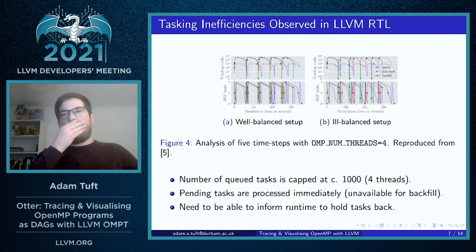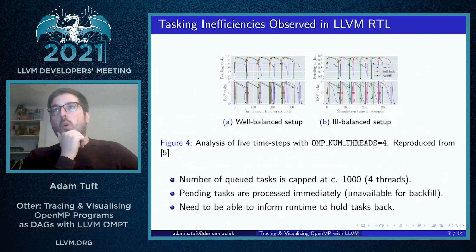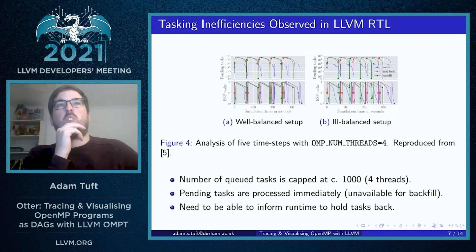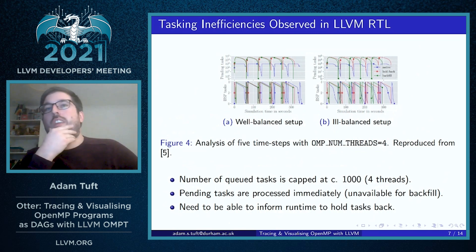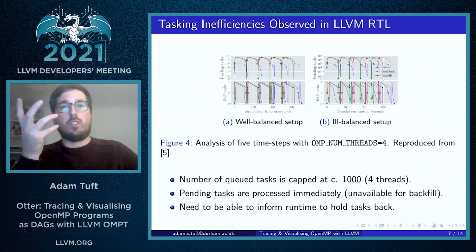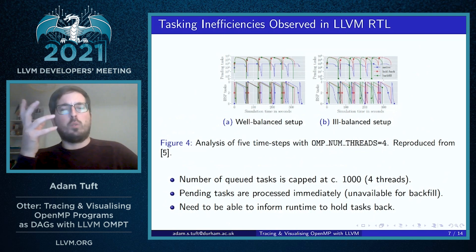The results of this exploration into the performance of this solver in the LLVM OpenMP implementation did reveal some unexpected results. It showed that the backfill tasks were actually being capped — the number of tasks that could be created was capped at about 1,000 for 4 threads.